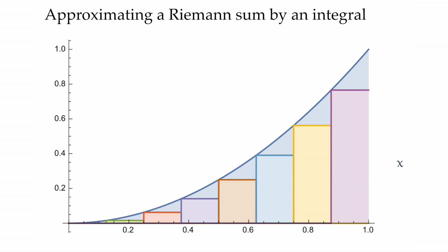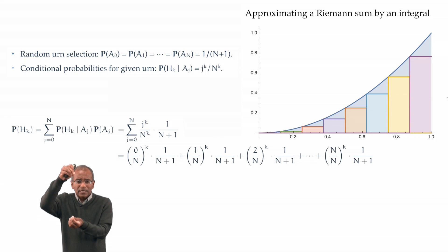If you look at the j-th summand, it's got a height, j over n to the power of k. And so that gives you the height of the curve x to the power of k at the point j over n. It's multiplied by 1 over n plus 1. If we subdivide the unit interval into n plus 1 pieces, each of width 1 over n plus 1, then the j-th term corresponds to a rectangle of height j over n to the power of k, and width 1 over n plus 1. And therefore, the j-th term is identified as the area under the j-th rectangle.